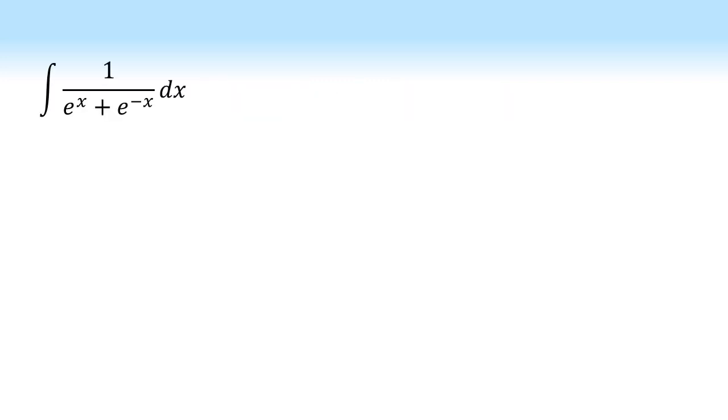So the first thing to look at when we're integrating anything is can we integrate by inspection. We've got 1 over e to the x plus e to the minus x. Well there's nothing obvious that will differentiate to make this, so we can't do this by inspection. So we've got to look for another method.